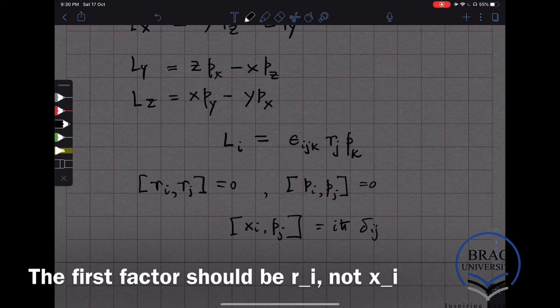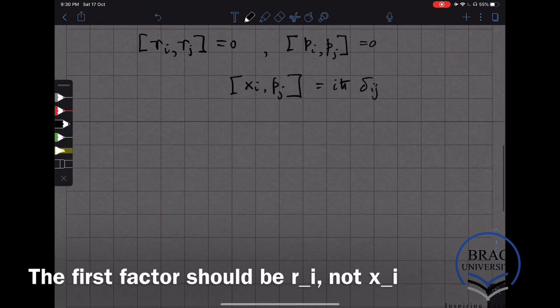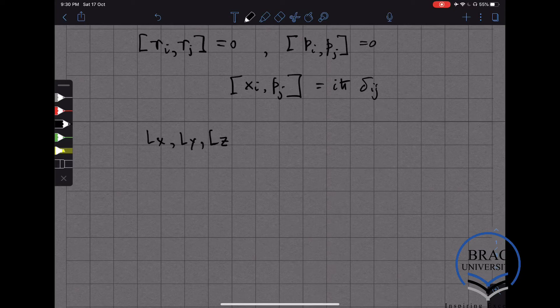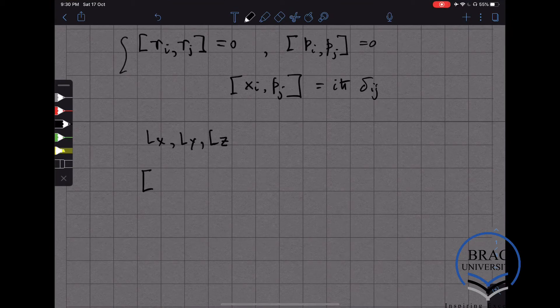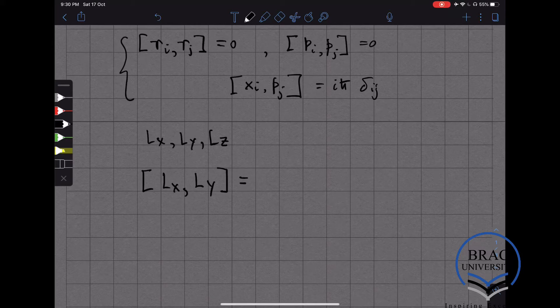Now we can use these to compute what the commutation relationships are between Lx, Ly, and Lz. Because they are quantum mechanical operators, in general, they will not commute. It's straightforward to show using these relationships that the commutator of Lx and Ly gives i h bar Lz.